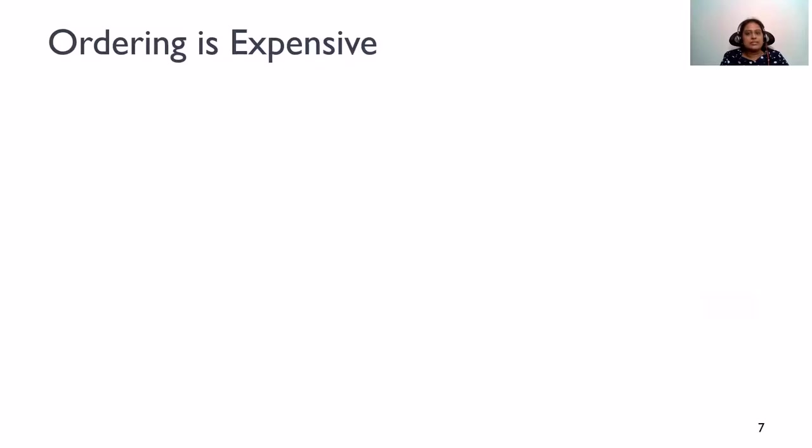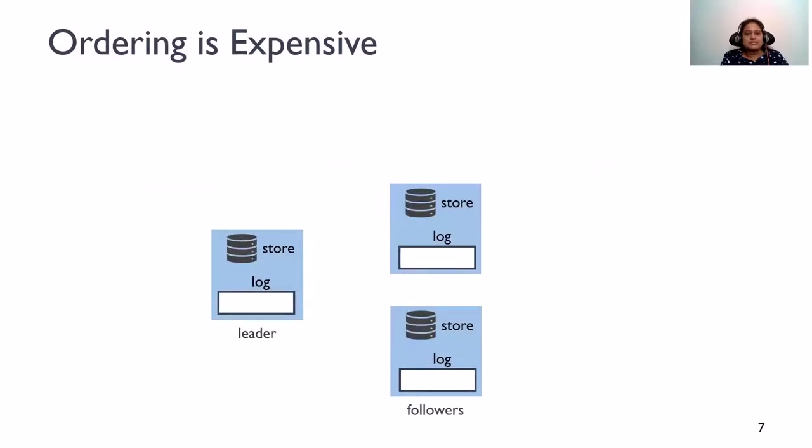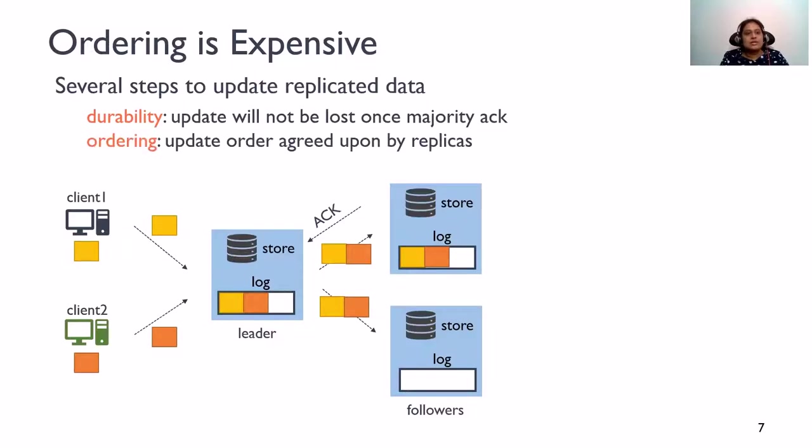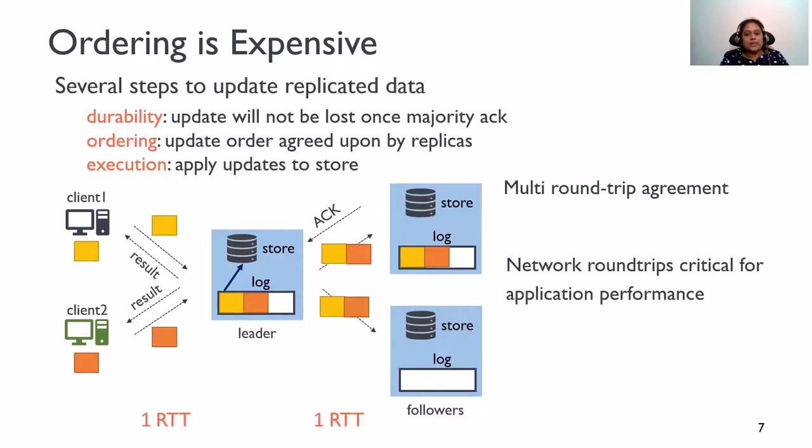A storage system built using this standard approach has high overheads. Let's see why. Usually in these systems, one of the replicas is called the leader and the others are called the followers. Each replica has something called a log. Let's suppose you want to apply multiple updates to the store. The clients send the request to the leader. The leader assigns an order for these operations, persists them to the log, replicates them to the followers. Followers add these operations to their logs and acknowledge the leader. Once a majority of replicas have acknowledged, the operations are durable and won't be lost. The system has now also established an order for these requests, and this order won't change. So, at this point, the leader can execute these updates and return the results.